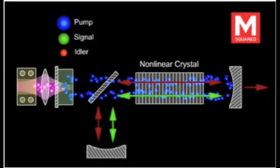This compact laser contains a pump diode laser, a DPSS laser at 1064 nanometers with a 10 nanosecond pulse duration, and an optical parametric oscillator.